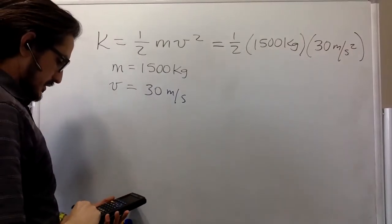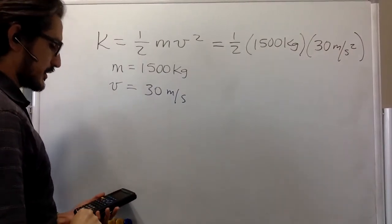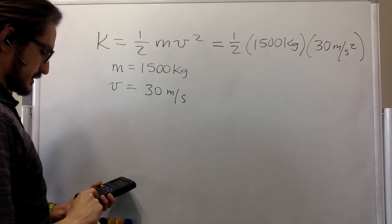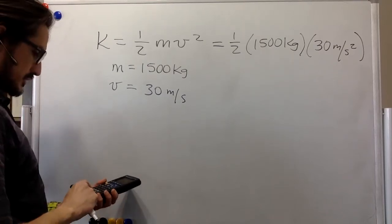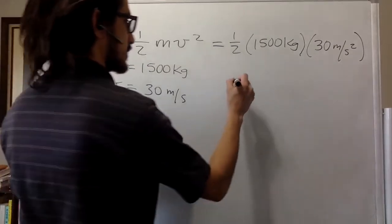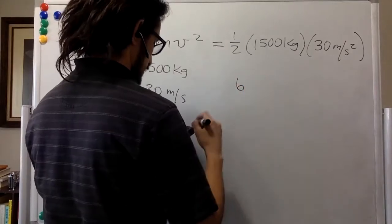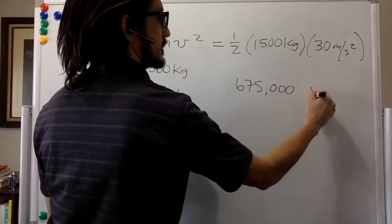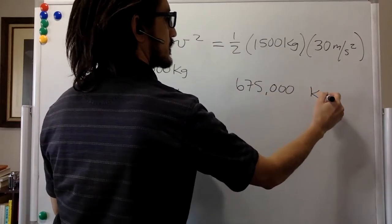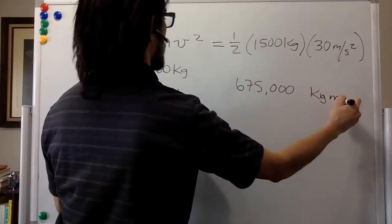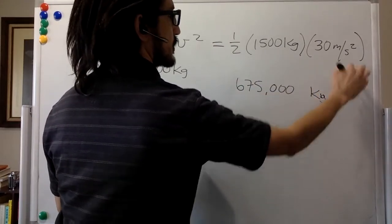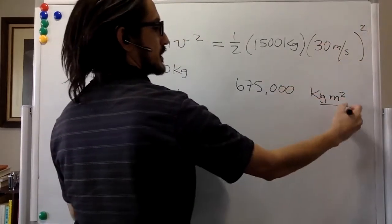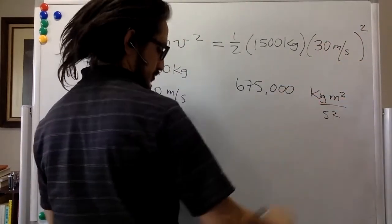1/2 of 1,500 kilograms times 30 meters per second squared. Grab the calculator. 30 squared is 900 times 1,500 divided by 2. That's 675,000 kilogram meter squared. Sorry, this is meter per second squared. Meter squared, second squared. So this is joules.